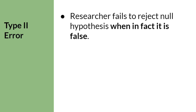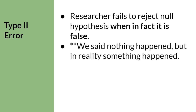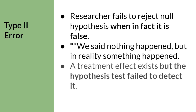Now let's review the second error, which is called a type 2 error. This happens when the researcher fails to reject the null hypothesis when in fact it is false. A decision to fail to reject the null hypothesis means that we said the study did not work, or that nothing happened. If the null hypothesis is false, that means that something did happen after all. In other words, we said nothing happened, but in reality, something happened. From a researcher perspective, a treatment effect does exist, but the hypothesis test failed to detect it. Basically, they said the drug did not work, but the drug really does work.